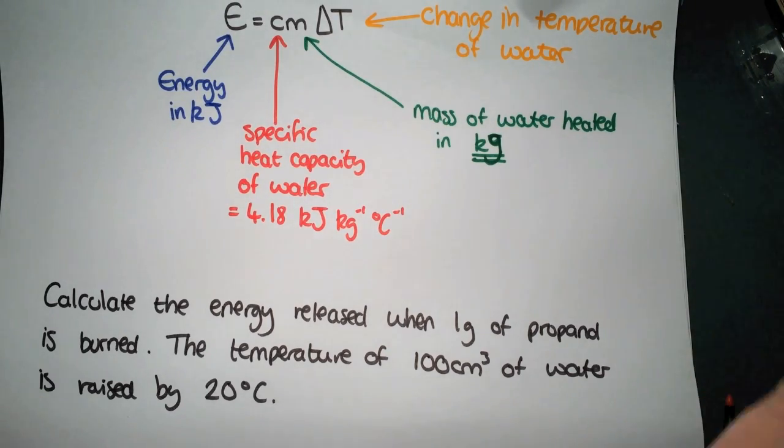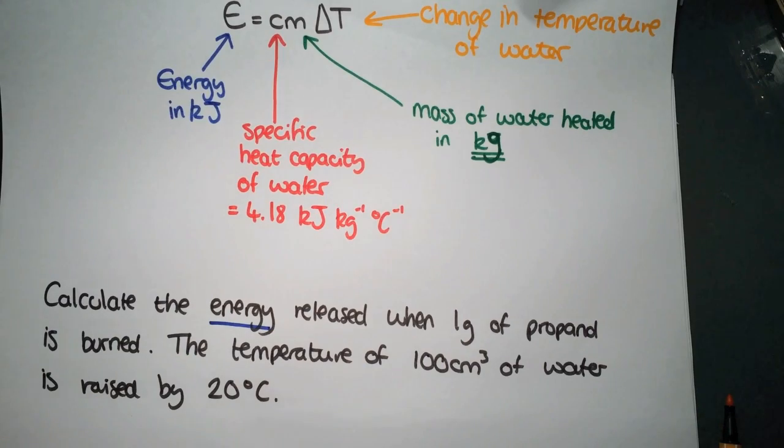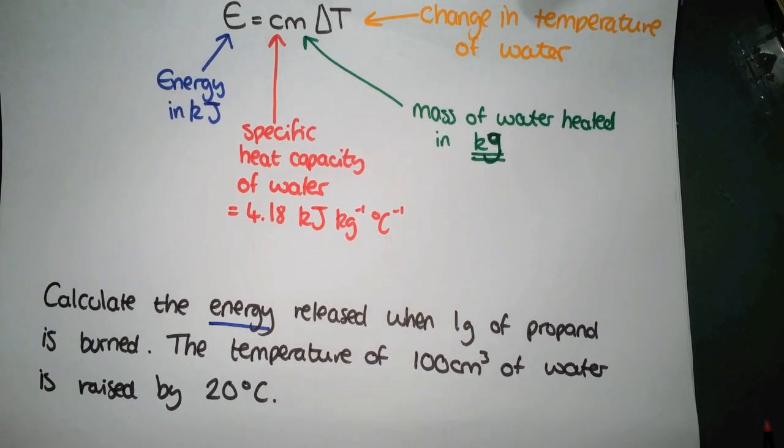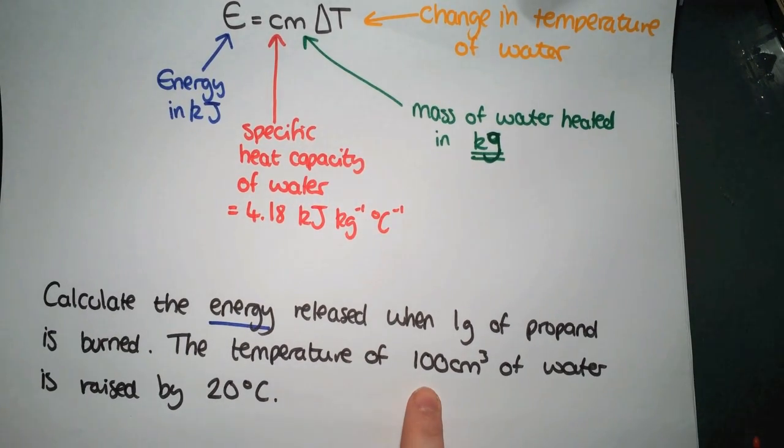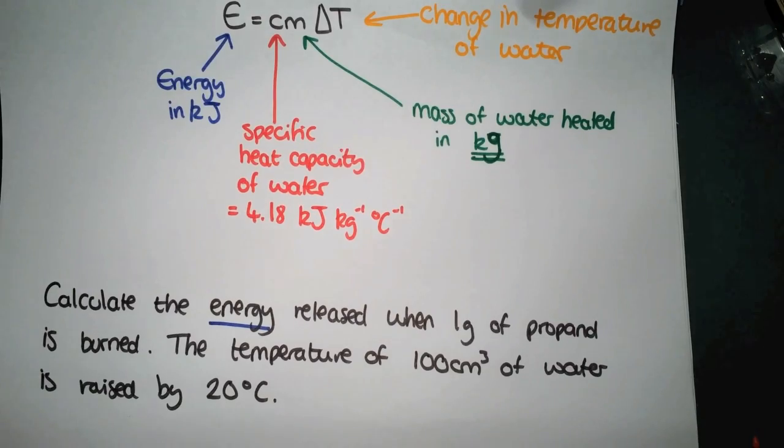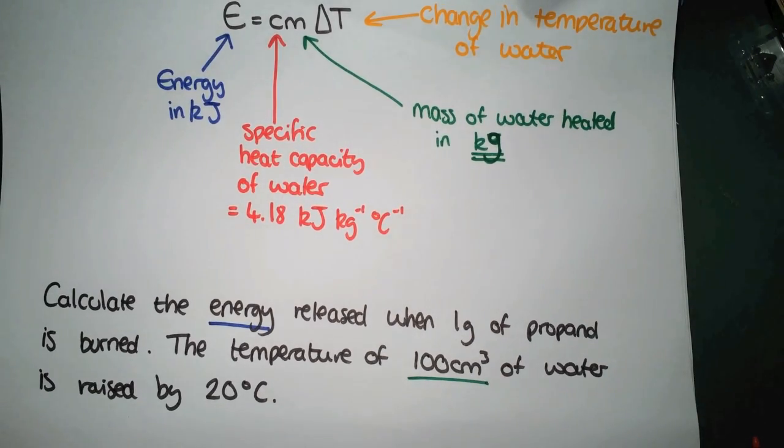So we are calculating energy. We have volume of water, which we can turn into a mass. So we can do that later. We have temperature rise. So they've given you the delta T there. And the C is in your data book.